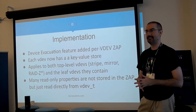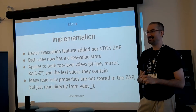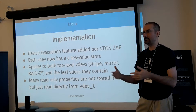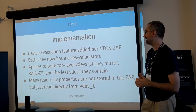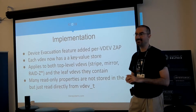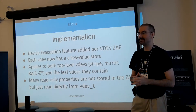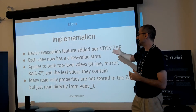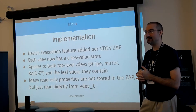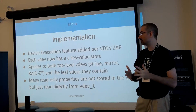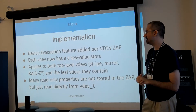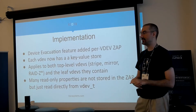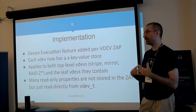Luckily, when Matt and people at Delphix did the device evacuation work they had to add a per-vdev ZAP to keep track of status and how far through the scanning process they were, so I could just glom onto that. All the code to make sure the ZAP gets allocated and dealing with upgrading pools that didn't have one was already there, which made it much easier. Every vdev already has this handy ZAP key-value store that I can just use, and it applies both to top-level vdevs, RAID-Z, and the actual leaf vdevs themselves.